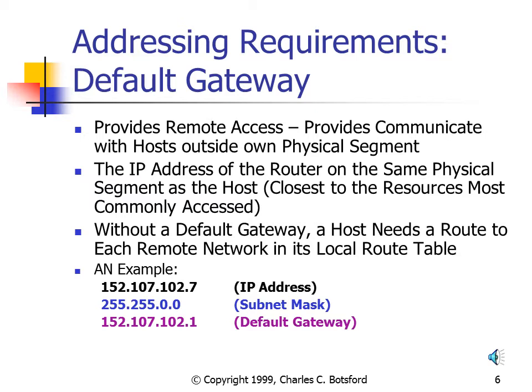The Default Gateway address is really the IP Address of the router on our same physical segment. If there's more than one router on our physical segment, we configure the Default Gateway with the IP Address of the router closest to the resources we most commonly access. Without a Default Gateway, it is still possible to communicate remotely, but we would need an entry in our route table for each remote network. More commonly, we configure each TCP/IP device with a Default Gateway.